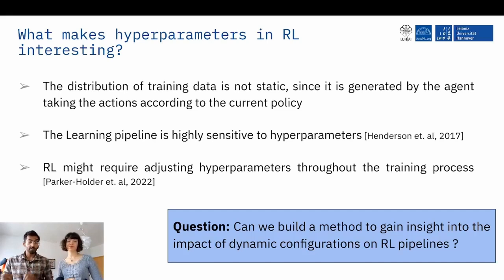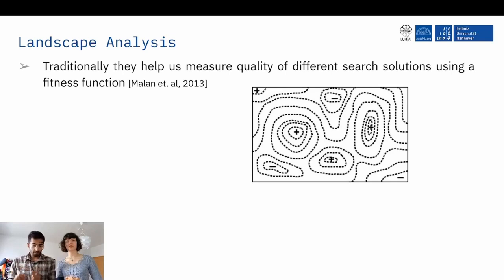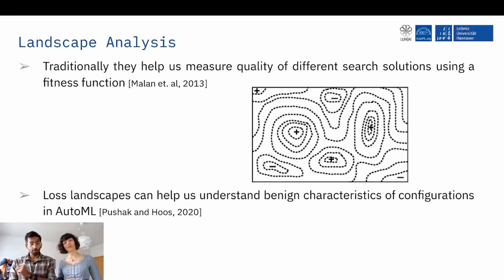The method that we employed here has existed traditionally in the optimization community called landscape analysis, where you have a bunch of different search solutions, and you want to understand stuff about them using a fitness function that evaluates their quality. And you plot it on a landscape that looks somewhat like this, which has peaks represented by plus signs and troughs represented by the minus signs. And what we can do is analyze the curvature, we can analyze modality and what else. And similar analysis have also been performed previously by Pushak and Hoos in the realm of AutoML, where they characterize the benign characteristics of the configurations.